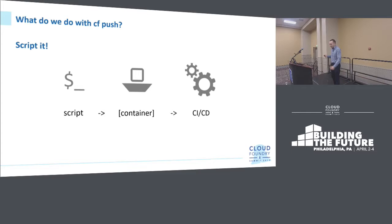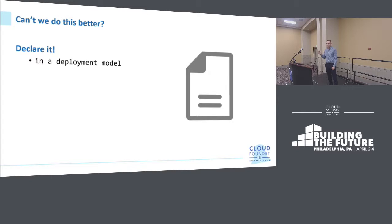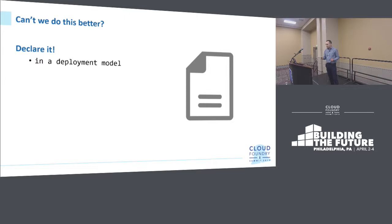So what can we do instead of scripting? We can declare our deployments. Instead of imperatively telling the platform what to do, we can declare in a document how our solution should look — declaratively in the form of text, in the form of a static model — and then give that declaration to a tooling which knows how to create all that stuff. CF Push kind of also has this covered: you can use CF manifests to do that.